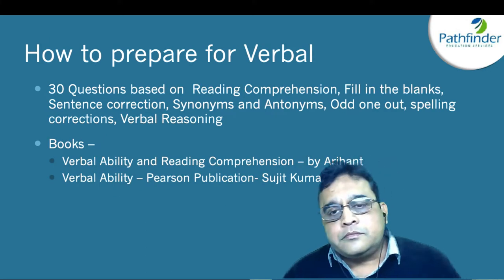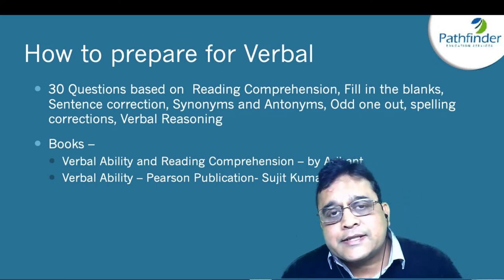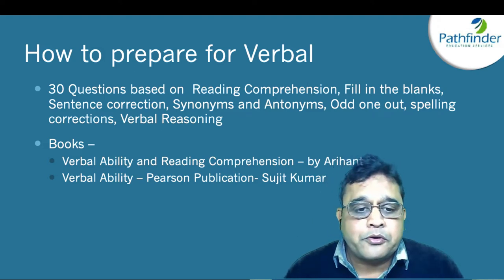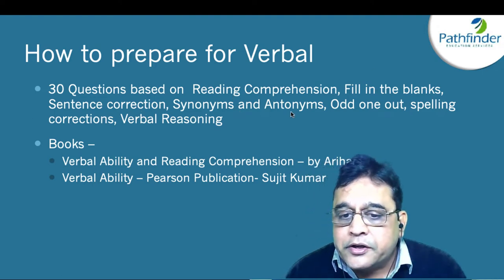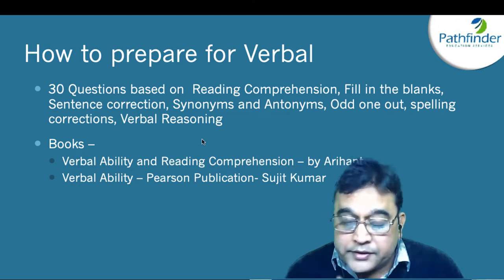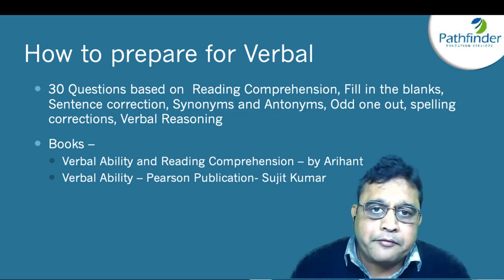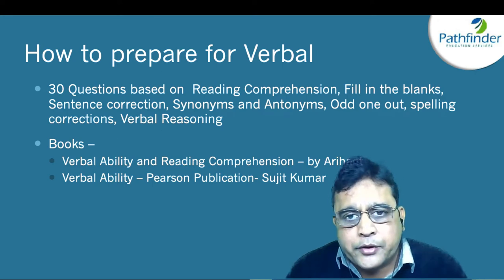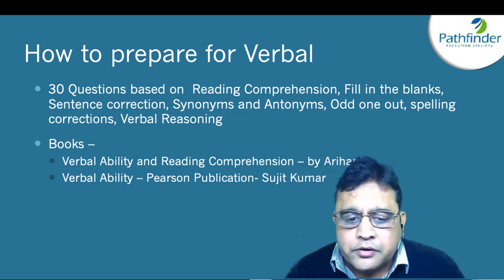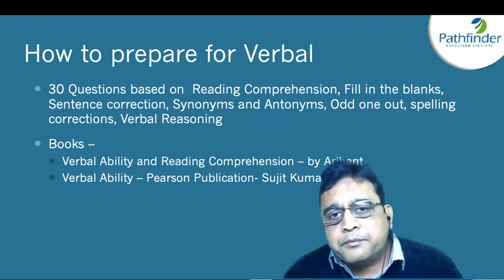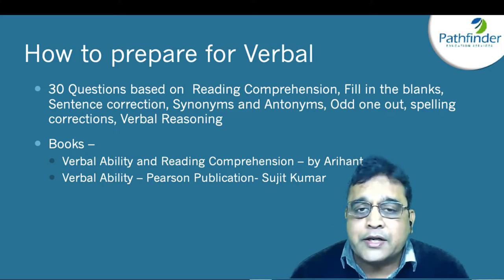For verbal ability, the TISS website again specifies class 10th grade level — nothing more. There will be 30 questions based on reading comprehension, fill in the blanks, sentence correction, synonyms, antonyms, odd one out, spelling corrections, and verbal reasoning. Good reference books include Verbal Ability and Reading Comprehension by Arihant Publications, or Verbal Ability by Sujit Kumar from Pearson Publications.